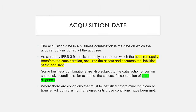That covers the permutations for the acquisition date. The acquisition date is also very relevant in a step acquisition — for example, if we purchased 10%, then 30%, then another 40%, now owning the company. The acquisition date would not be when we purchased the 10% or the 30%, but the date on which we obtained control. In step acquisitions, this becomes incredibly important.